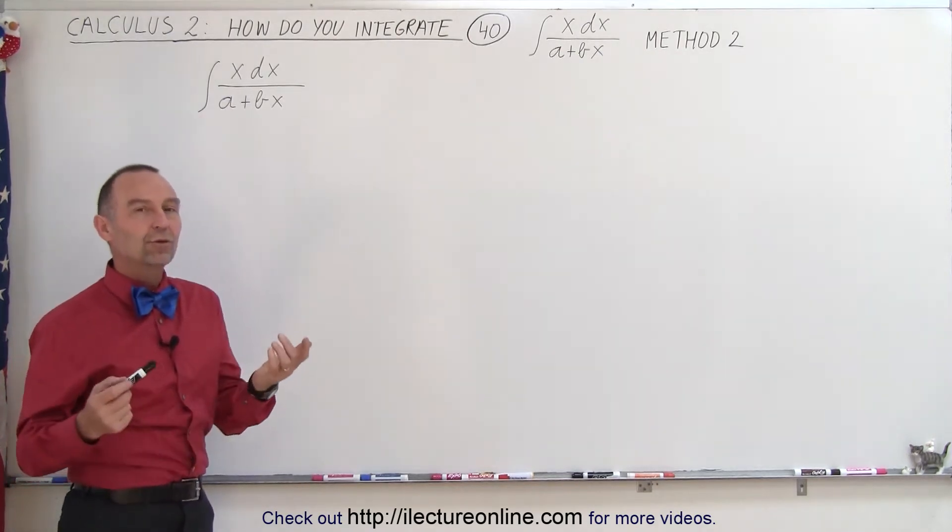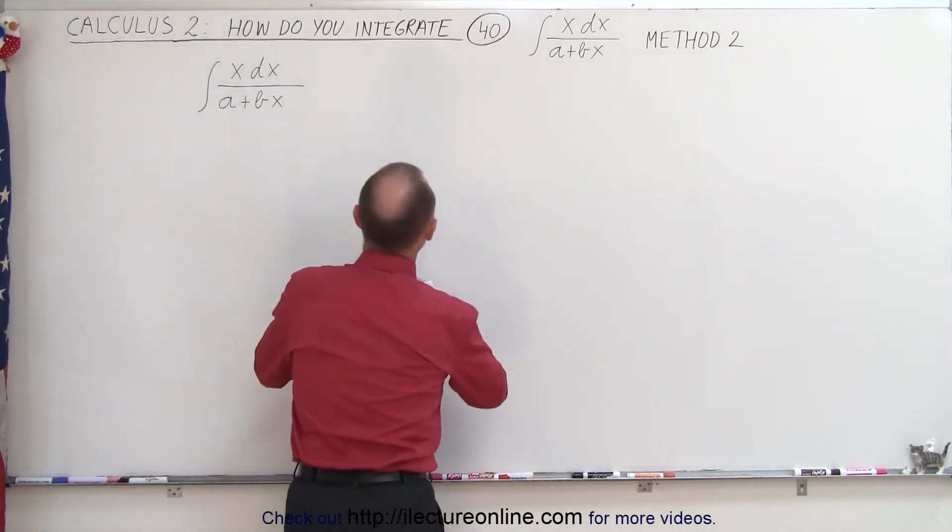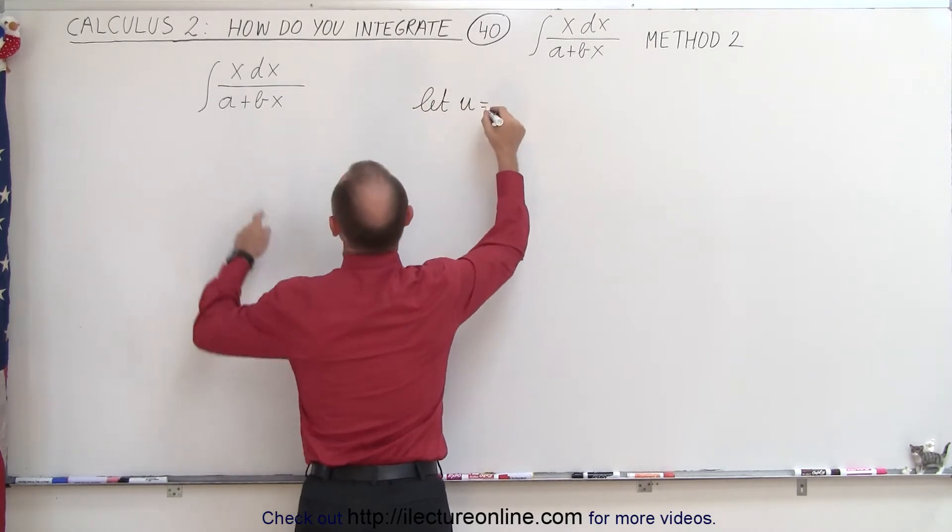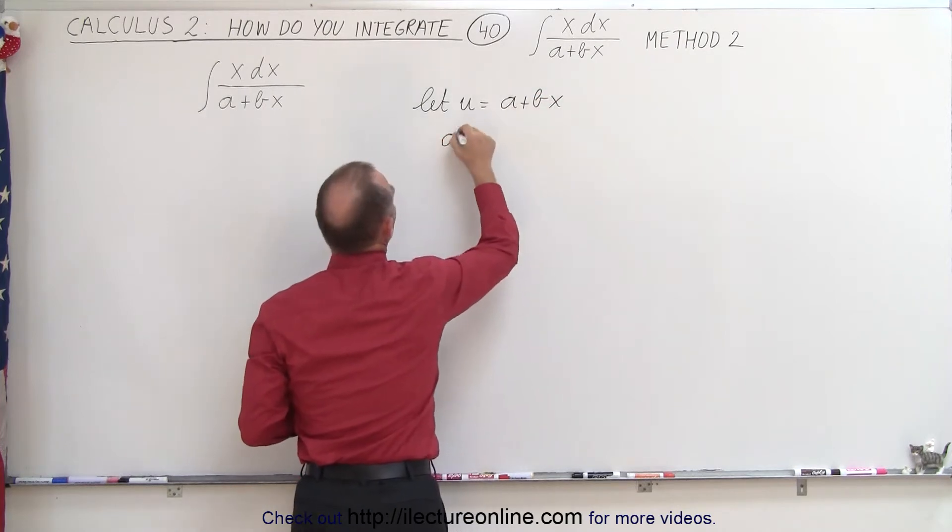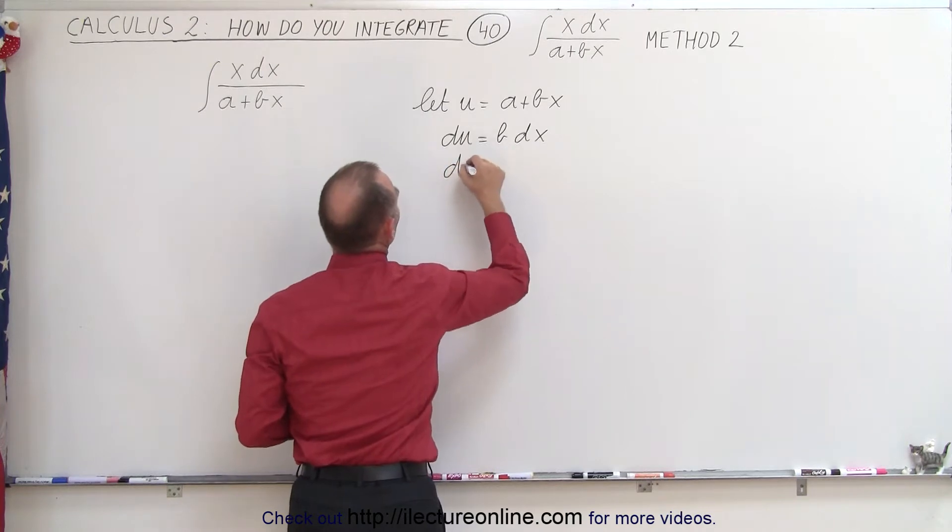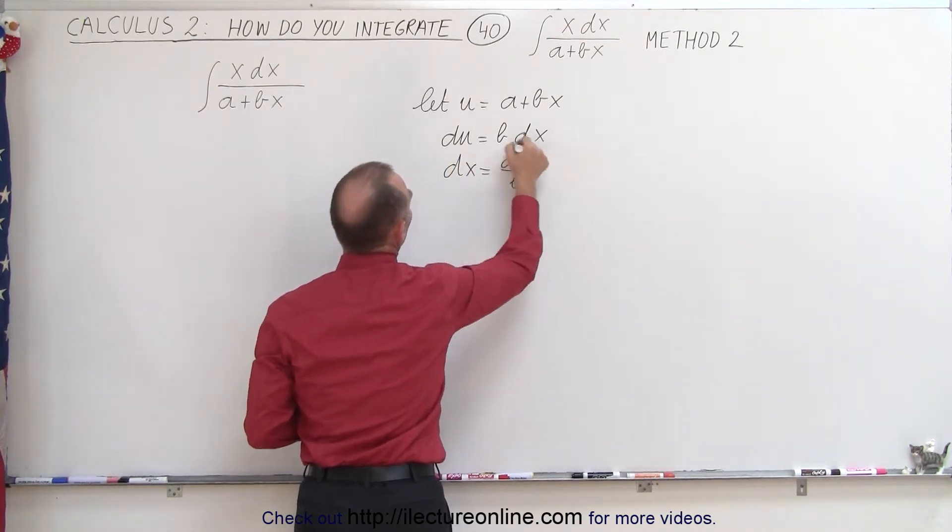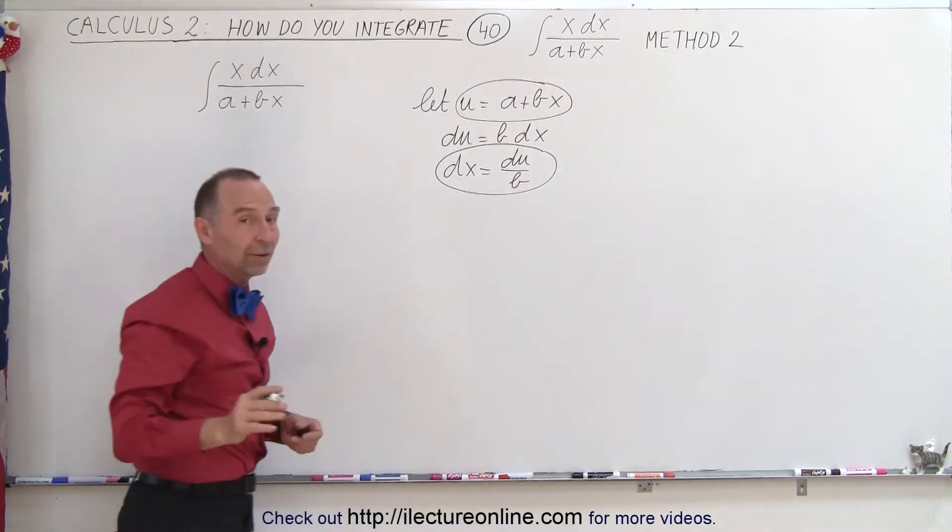Well let's do what we normally would try to do first, probably use a substitution method. We're going to let u equal a plus bx. Therefore du is equal to b dx and dx is equal to du divided by b. Let's substitute this and this back in the integral and see what happens.